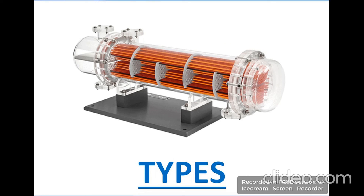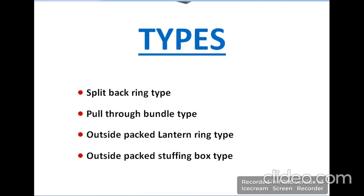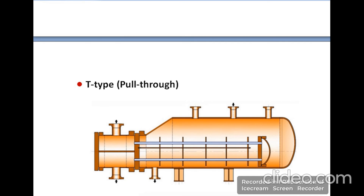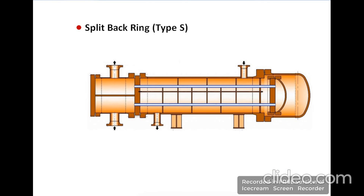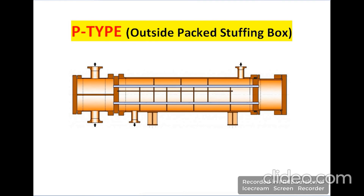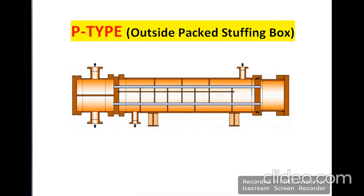Now the types of floating head heat exchangers are: first, the split back ring type; second, the pull through bundle type; third, the outside packed lantern ring type; and fourth, the outside packed stuffing box type. The pull through type is also called the T type due to its design. The split back ring type is also called the S type. The outside packed stuffing box type is also called the P type.